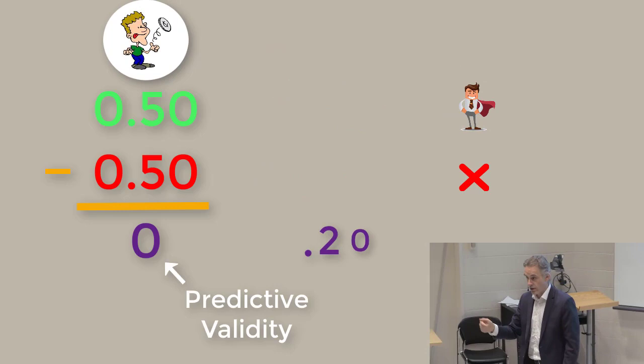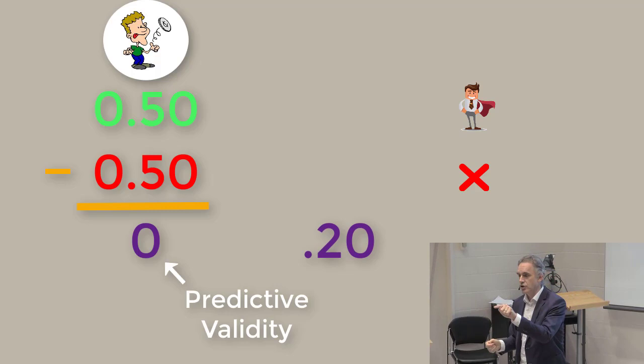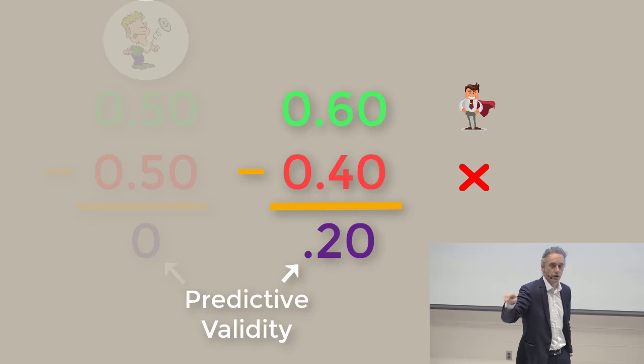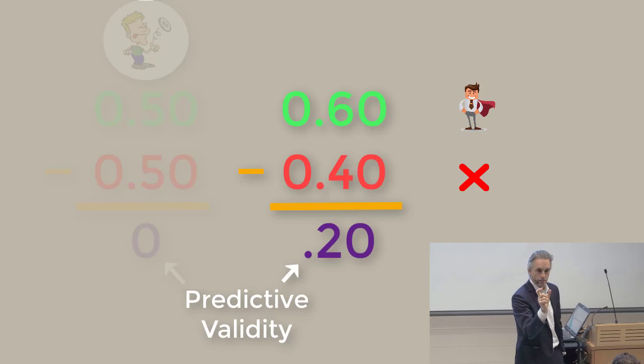If you have a predictor of 0.20, which is approximately the low end estimate for conscientiousness, then that would change your odds ratio from 0.50-0.50, right, random, to 0.60-0.40, because 0.60 minus 0.40 is 0.20. And so the correlation coefficient turns out to be the difference between the odds, so it gives you a quick rule of thumb.